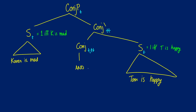What this is going to look like is lambda Q dot lambda P dot P and Q. So what we're doing essentially is when we encounter a sentence of type T, we insert it in. In order for this whole thing to be true, both of our conjuncts have to be true — P has to be true and Q has to be true. Let's push this up the tree and see how we can apply this.